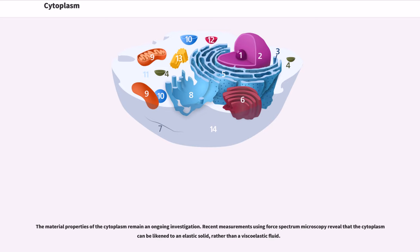The material properties of the cytoplasm remain an ongoing investigation. Recent measurements using four-spectrum microscopy reveal that the cytoplasm can be likened to an elastic solid rather than a viscoelastic fluid.